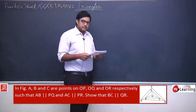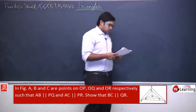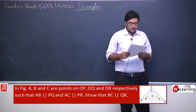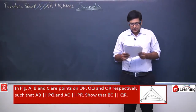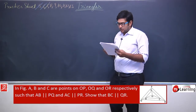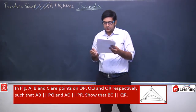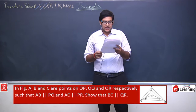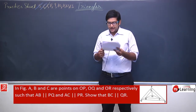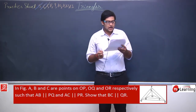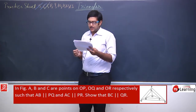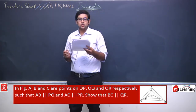Let us solve question number 8. The question says that in the given figure, A, B and C are points on OP, OQ and OR respectively, such that AB is parallel to PQ and AC is parallel to PR. We need to show that BC is also parallel to QR.